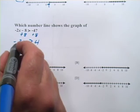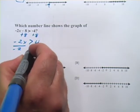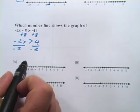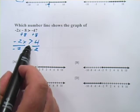And then the next step is to divide by negative 2, right? But here is where the special rule with inequalities comes in. When you multiply or divide by a negative, you have to flip the inequality sign.